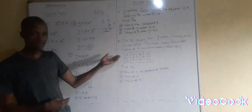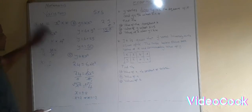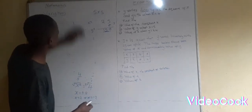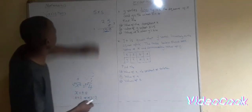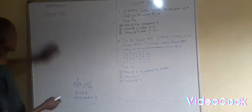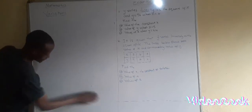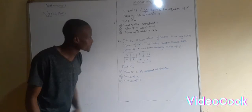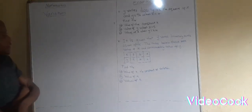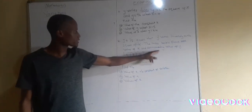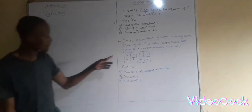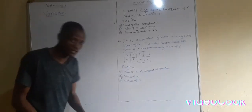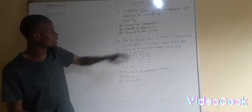Some questions will have a diagram like example 2. Question 2: it is given that Y varies inversely as the square of x. The table below shows some values of x and the corresponding values of Y. Find the value of k, the constant of variation. To answer this question, we must come up with the equation describing this relationship.